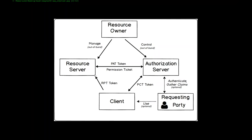What the resource server does is return a reference identifier for the request. It obtains what's called a permission ticket — really just a reference ID, a number — from the authorization server. At the time it obtains this permission ticket, it registers what scopes are required to grant access to this API. The resource server is the policy enforcement point, so it knows what scopes are required. The authorization server is the policy decision point — it knows what policies map to those scopes.